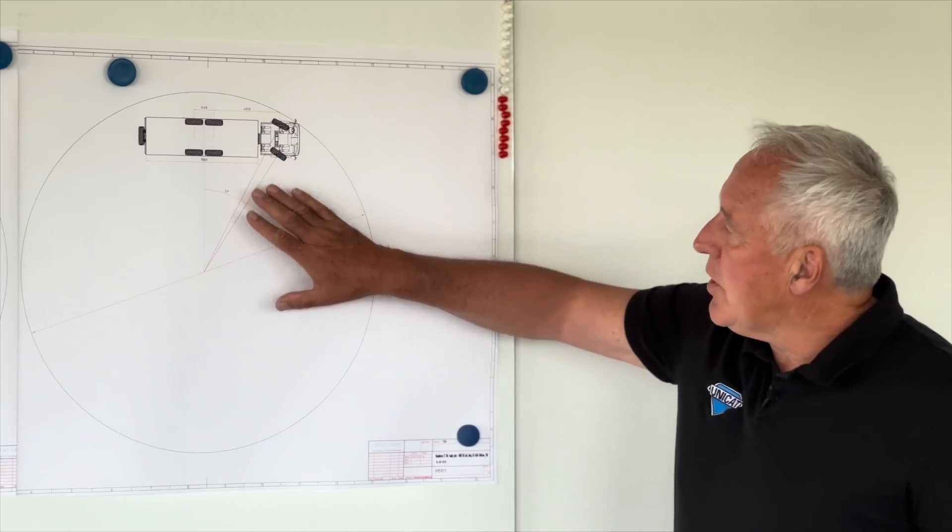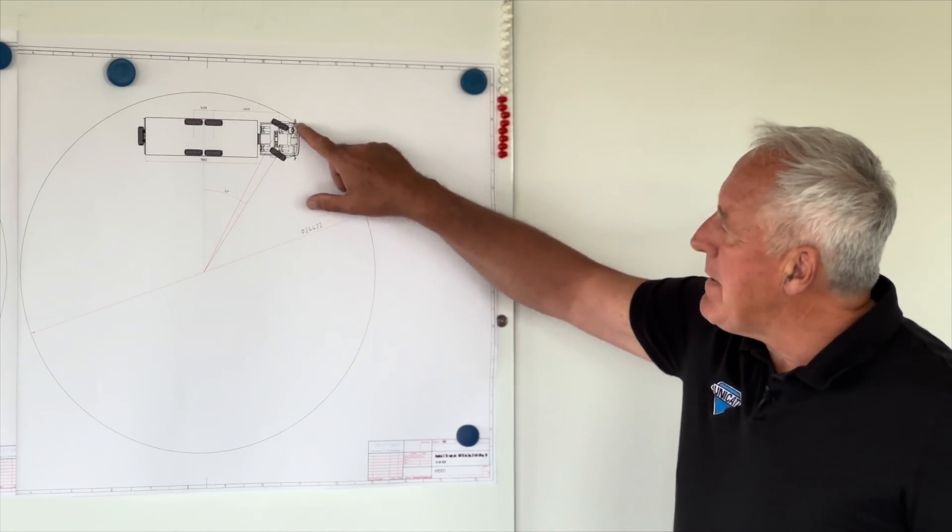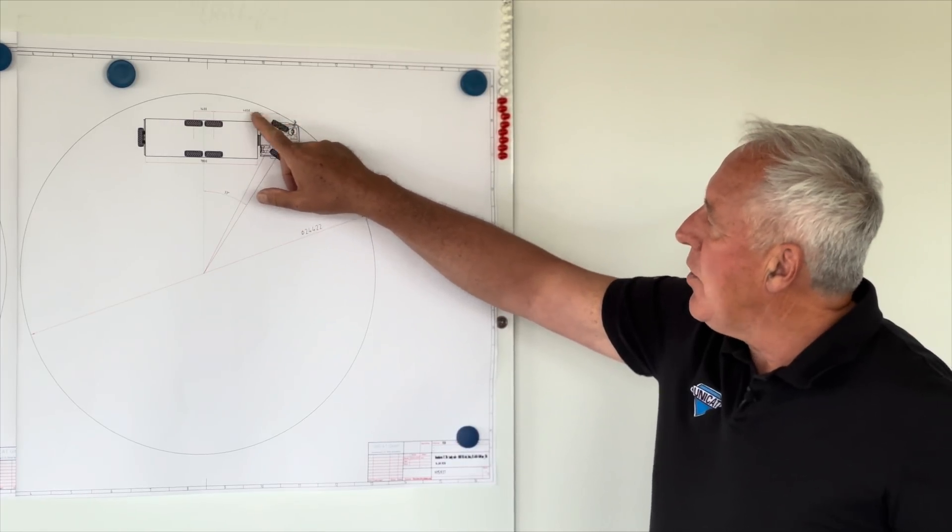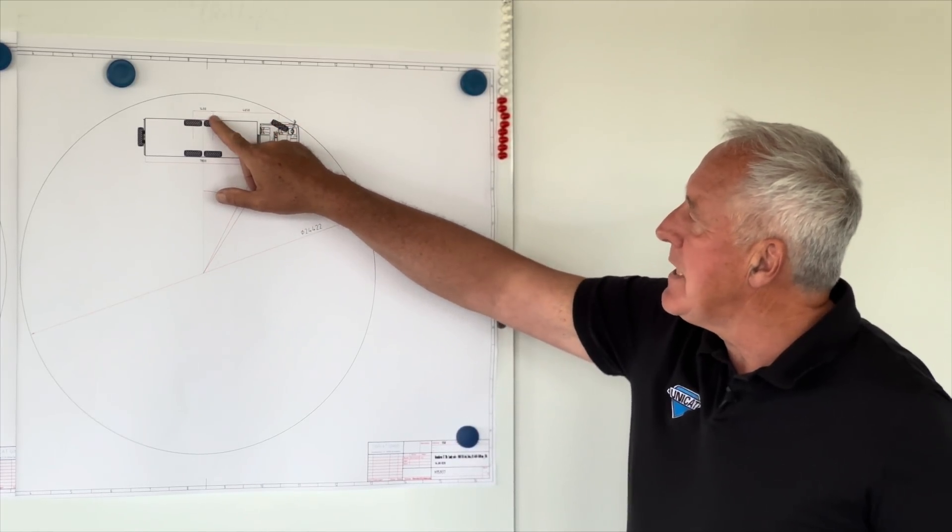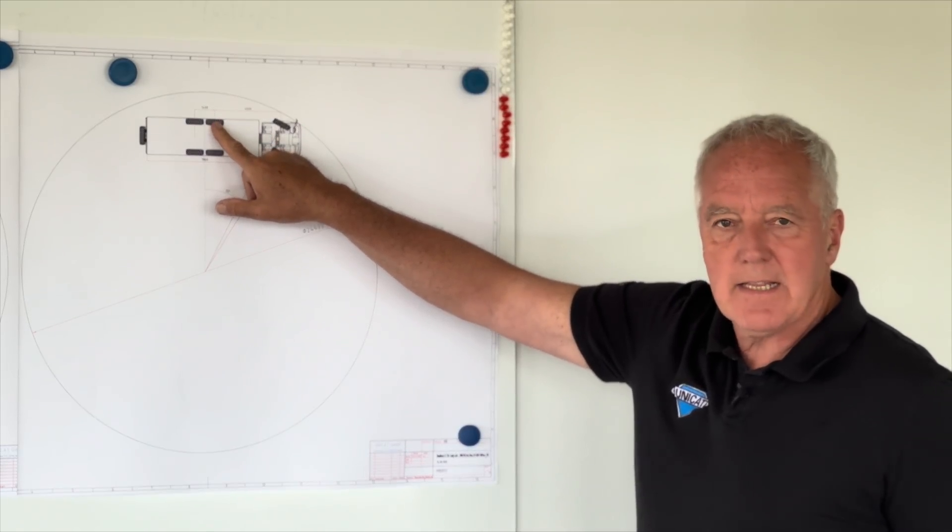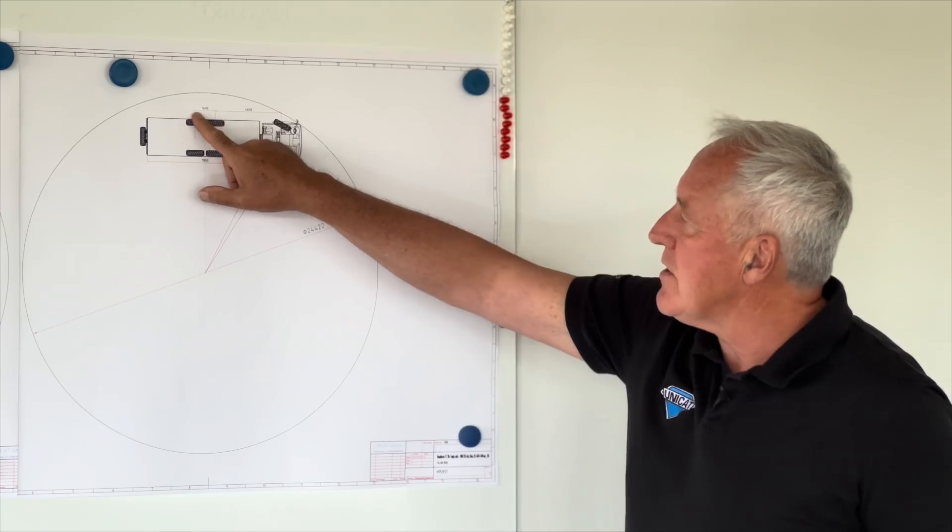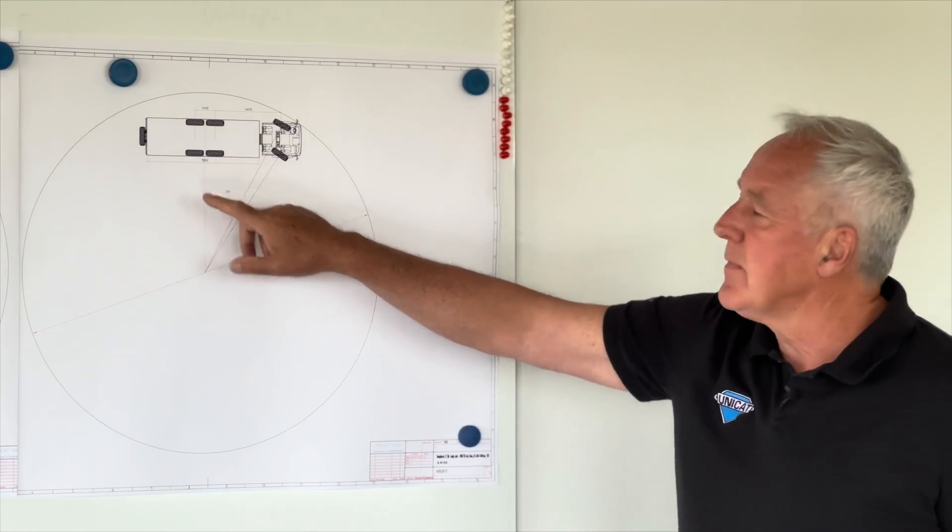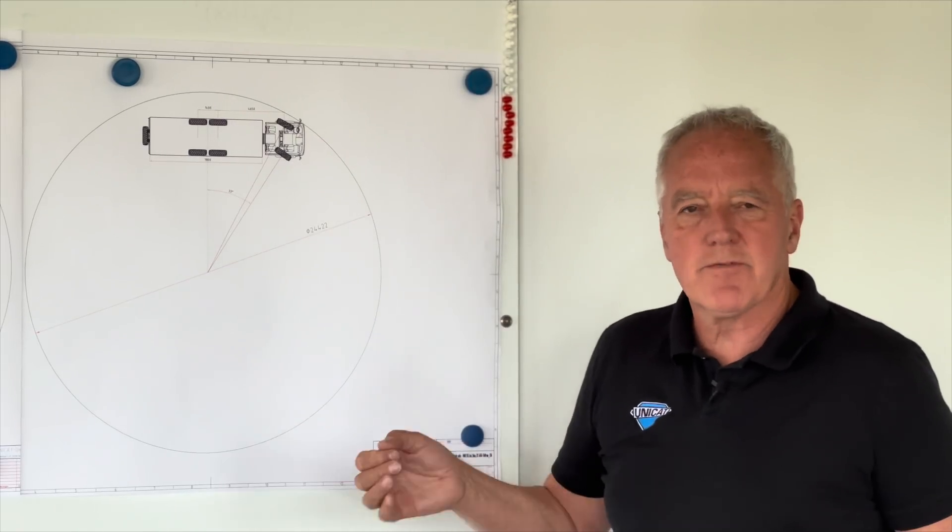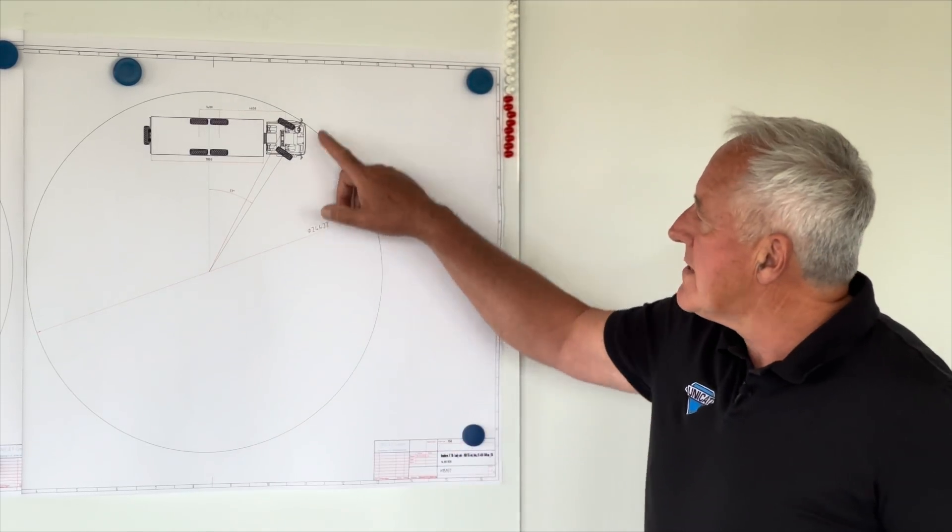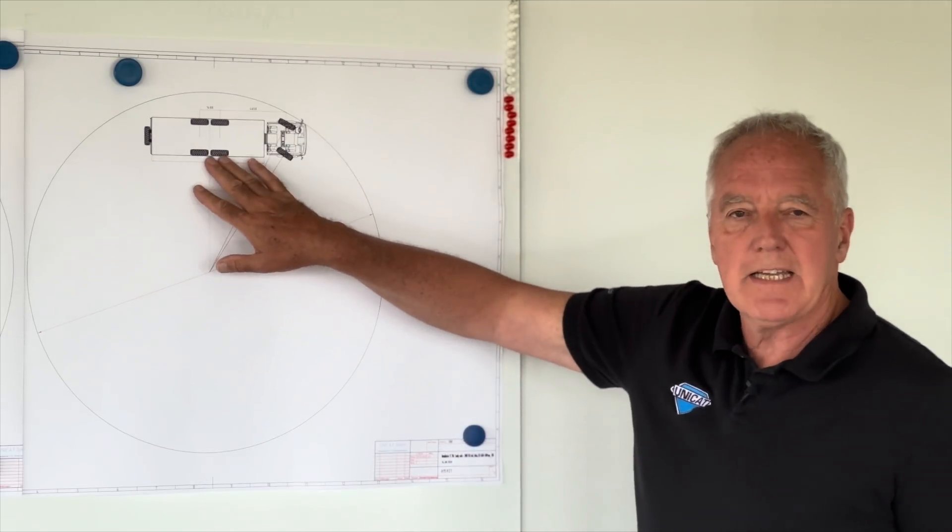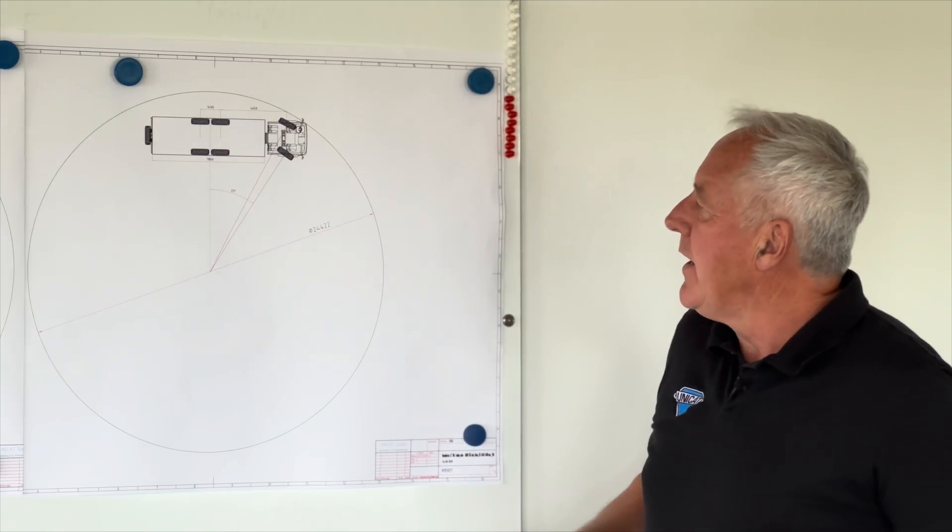Here on this drawing you see a MAN crew cab with a wheelbase of 4,650 mm from front axle to first rear axle and then another 1,400 mm to the third axle. This is as the truck comes from the factory with steering in front of course, but no steering in the back, so solid axles in the back.